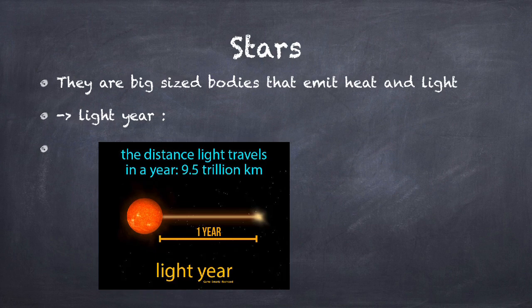The distance between stars is very large, so it's measured by light year. Light year is the distance covered by light in one year, and it equals 9.467 times trillion kilometers.